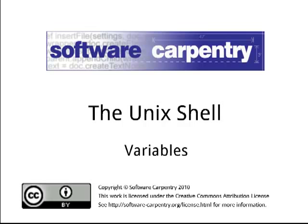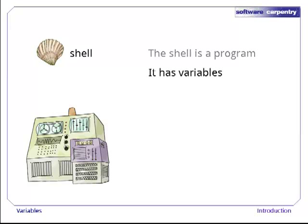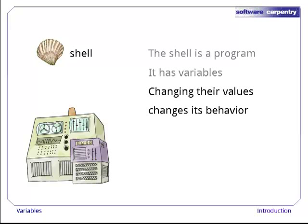Hello, and welcome to episode number 8 of the Software Carpentry Lecture on the Unix Shell. In this episode, we'll have a look at shell variables. As you've heard several times by now, we're looking at how to interact with a computer using a command line shell. The shell is just a program, and like other programs, it has variables. Those variables control its execution, and by changing their values, you can change how the shell and other programs behave.